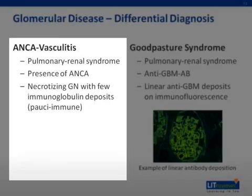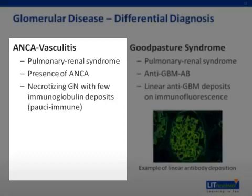ANCA vasculitis often affects glomerular and alveolar capillaries, hence the term pulmonary renal syndrome. The mediating antineutrophilic cytoplasmic antibodies are circulating in blood but are rare in glomerular stainings. Therefore, it is also named pauci-immune glomerulonephritis.